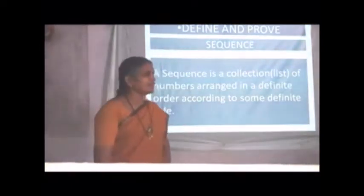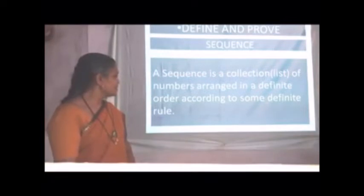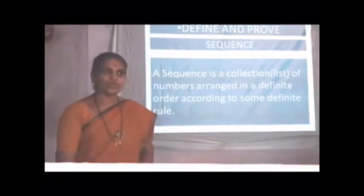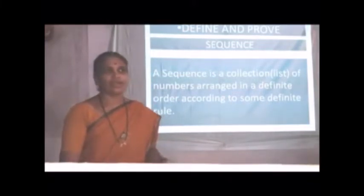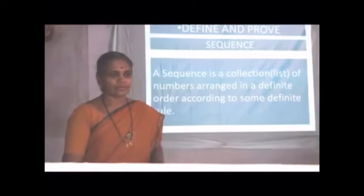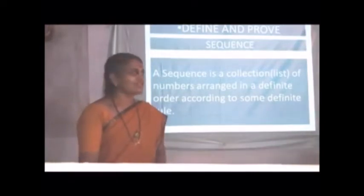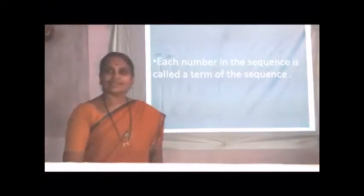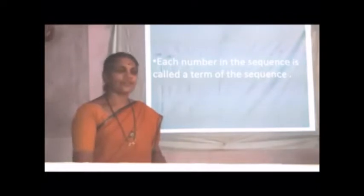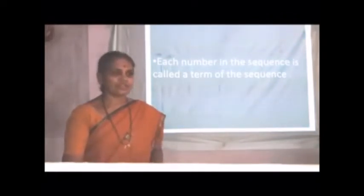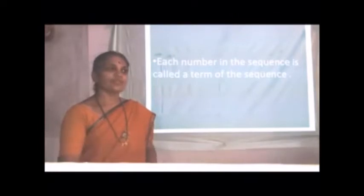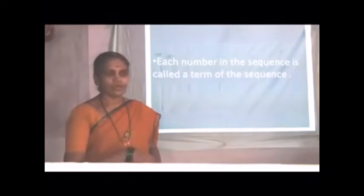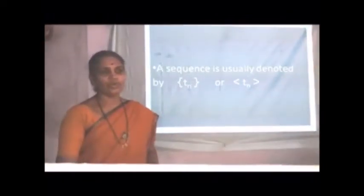A sequence is a collection of numbers, arranged in a definite order, according to some definite rules. So, there must be some rule, definite rule, and we can know this list as sequence. And each number in this sequence is called term. That is, first position number is first term. In second position, it is second term. And it is denoted by T1, T2. Third position, T3, and so on, up to Tn.